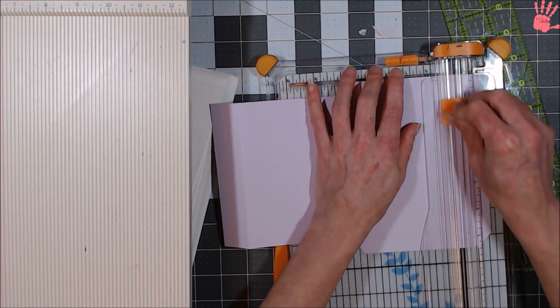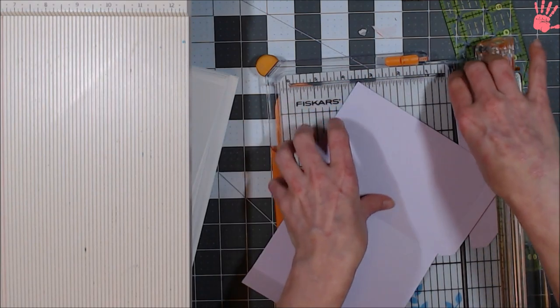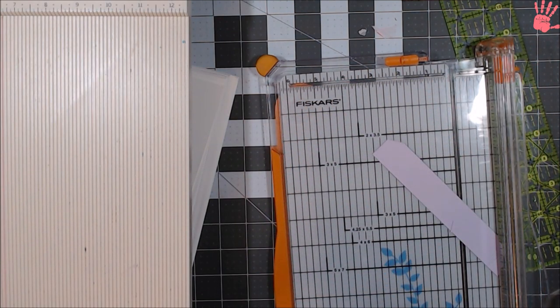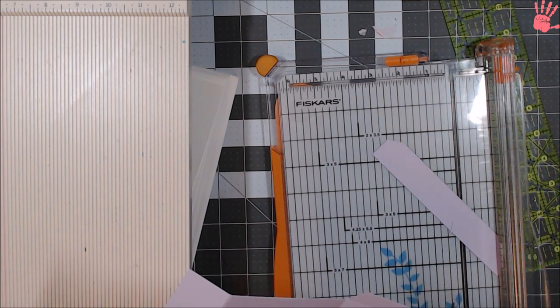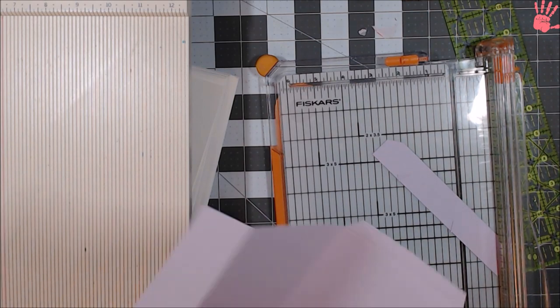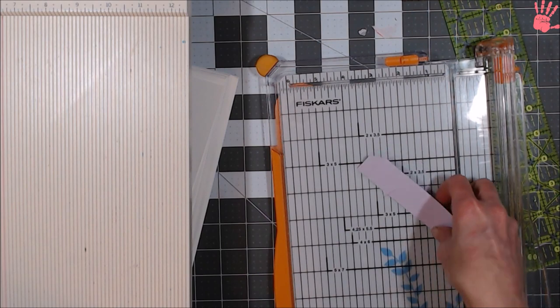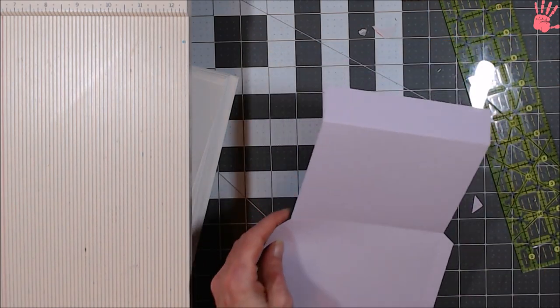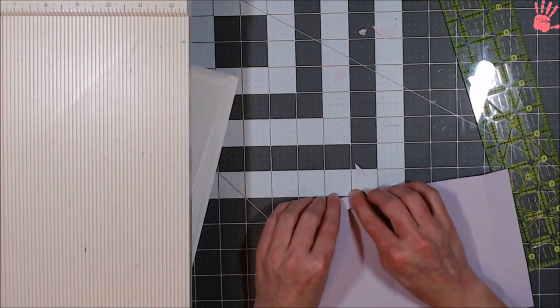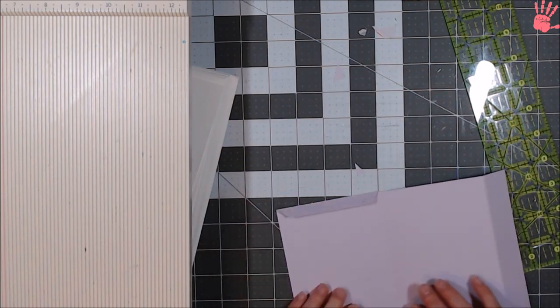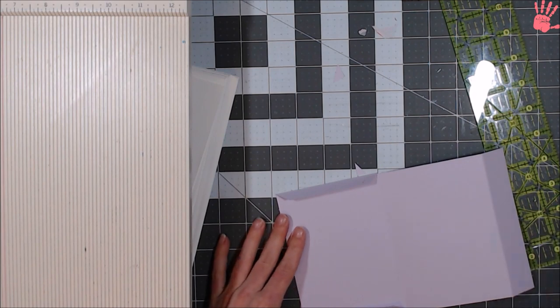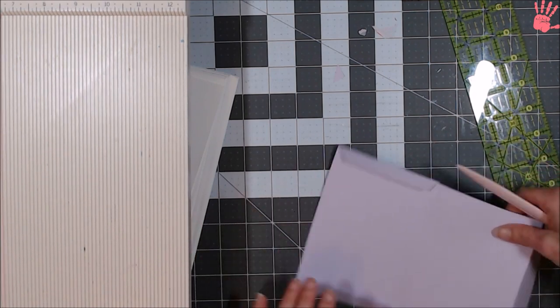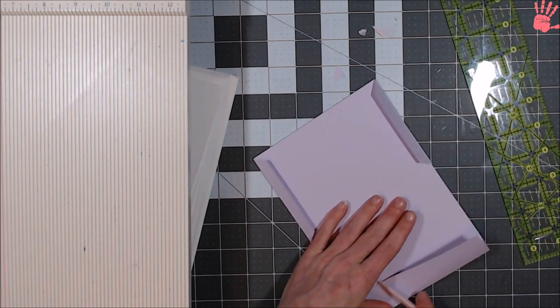Yeah, I think that's good. And then trim your edges again. I guess you could cut your paper the right length so you don't have, you know, waste. But that's just how I'm doing it. Okay, then what you do is you fold your ends in. Use your bone folder. You're flat.